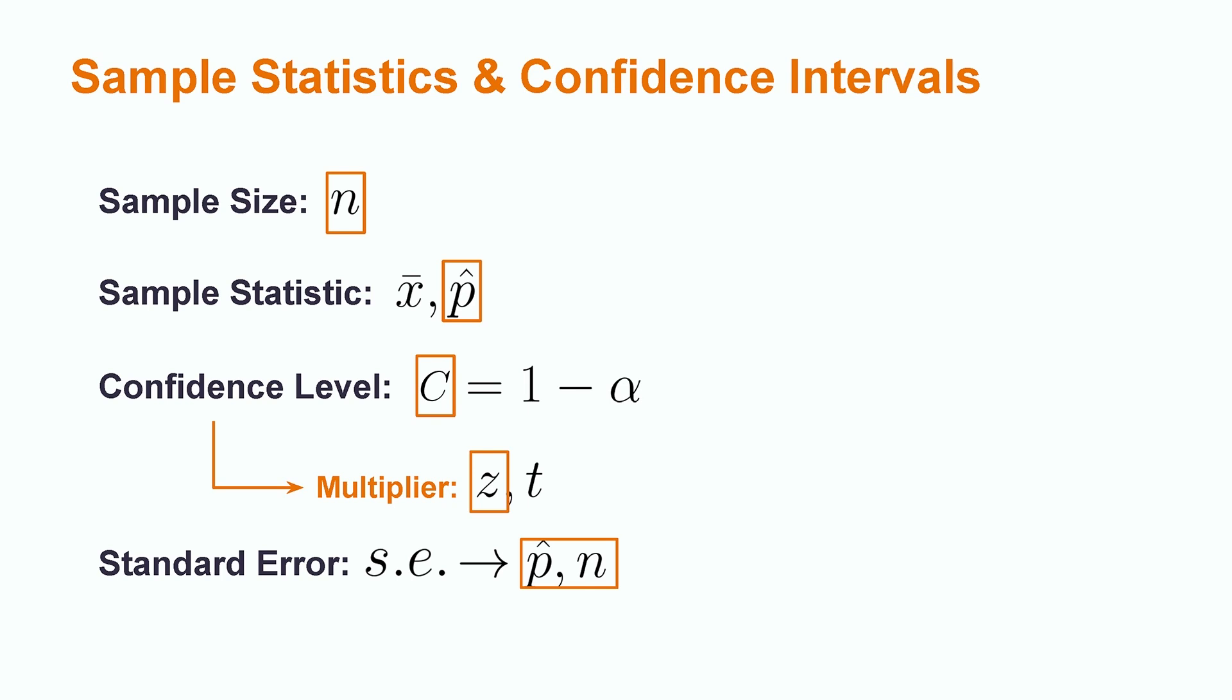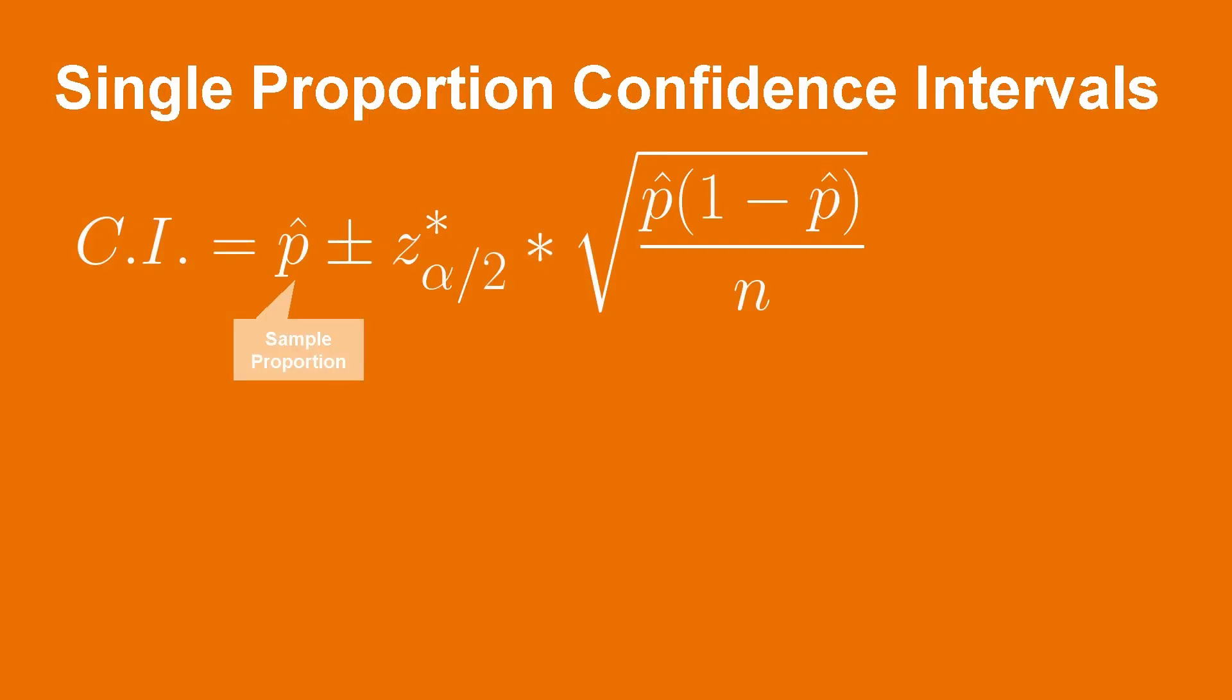Let's start actually writing down some equations for this confidence interval. The confidence interval for a single population proportion is centered at the sample proportion. We then add or subtract a term composed of a z multiplier times the standard error term. The z multiplier is dependent on the significance level over 2 to specify that we are working with a two-tailed confidence interval and is derived from the standard normal distribution.